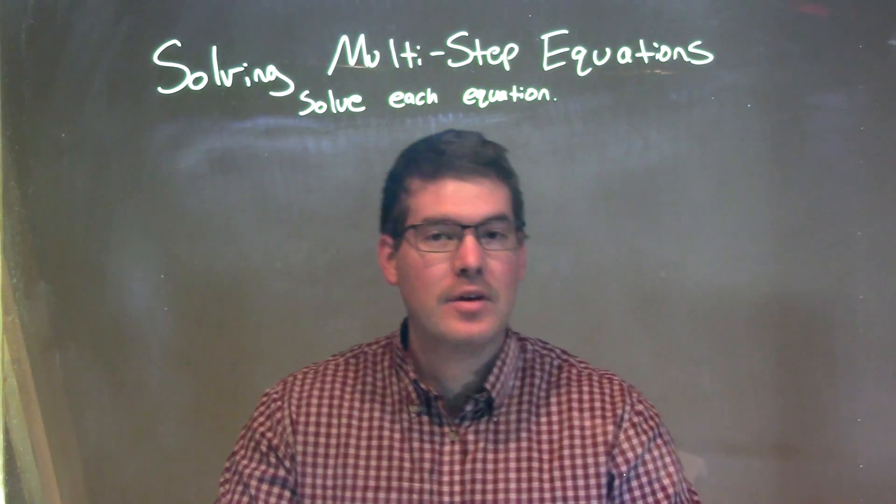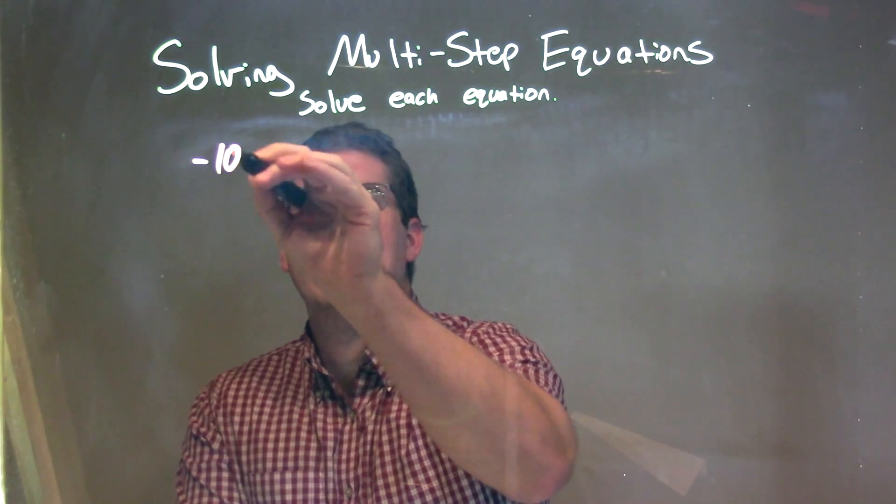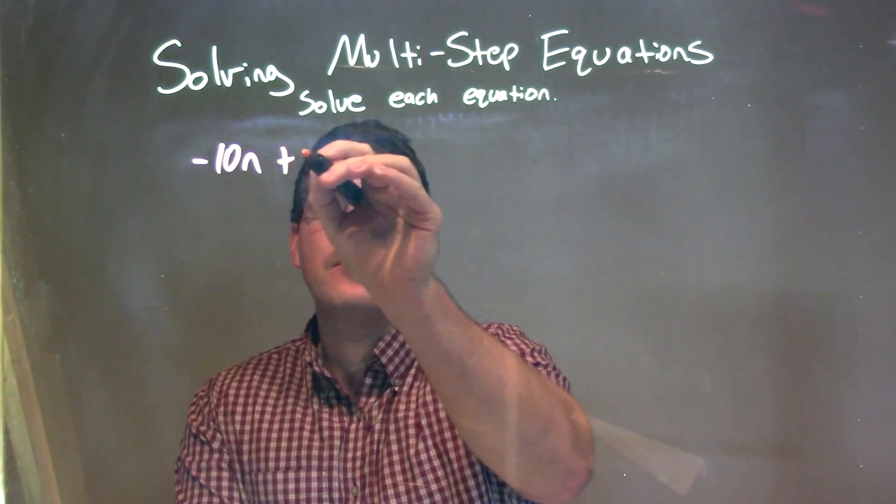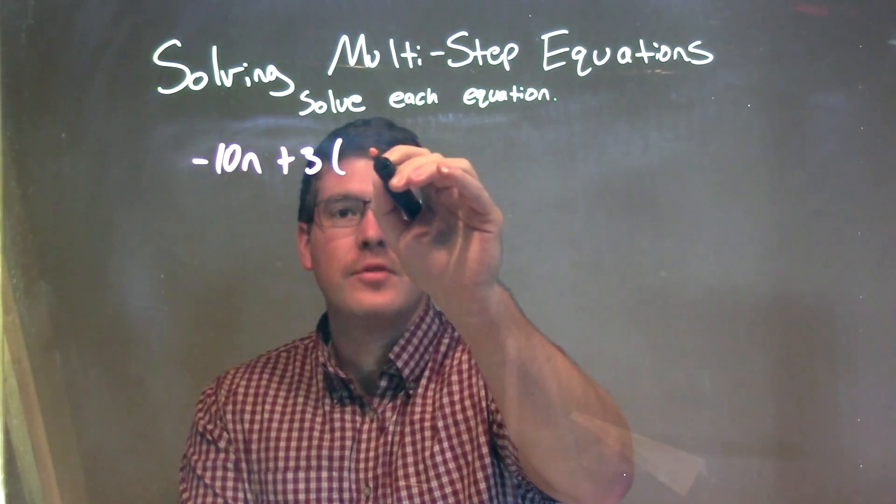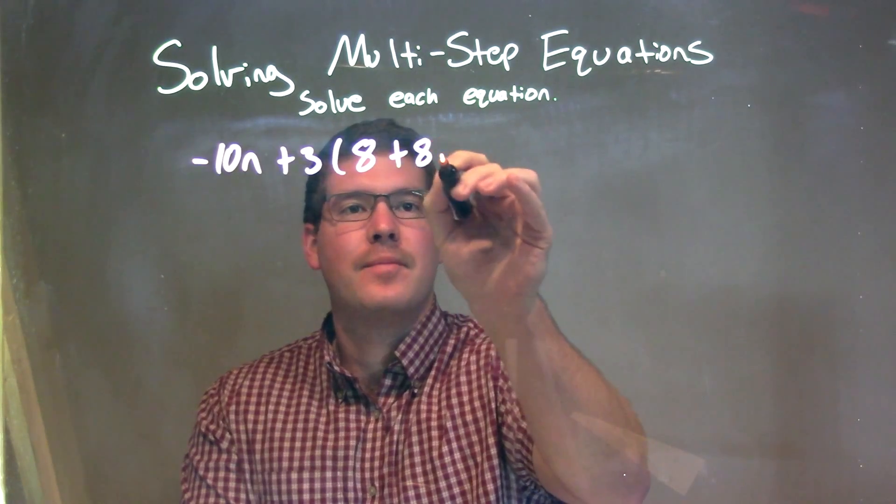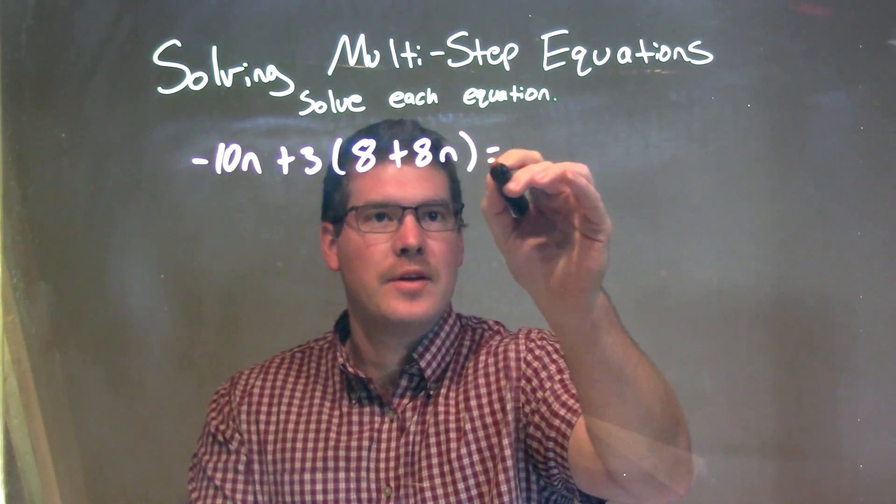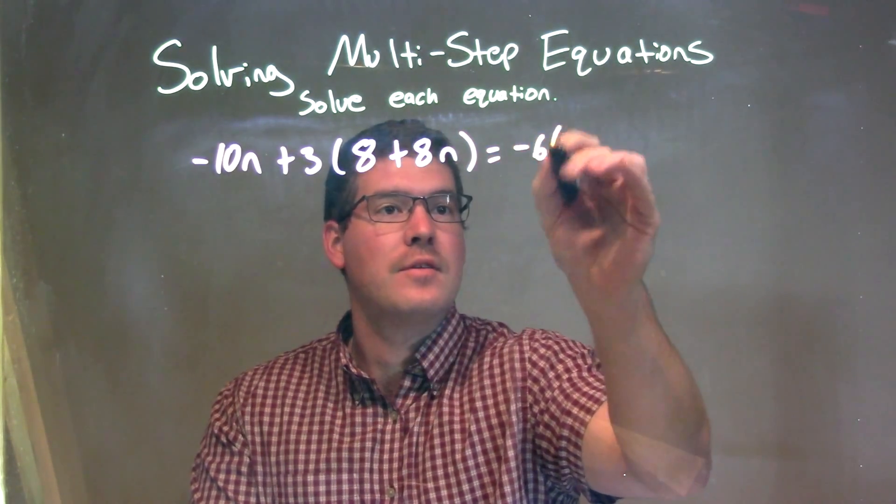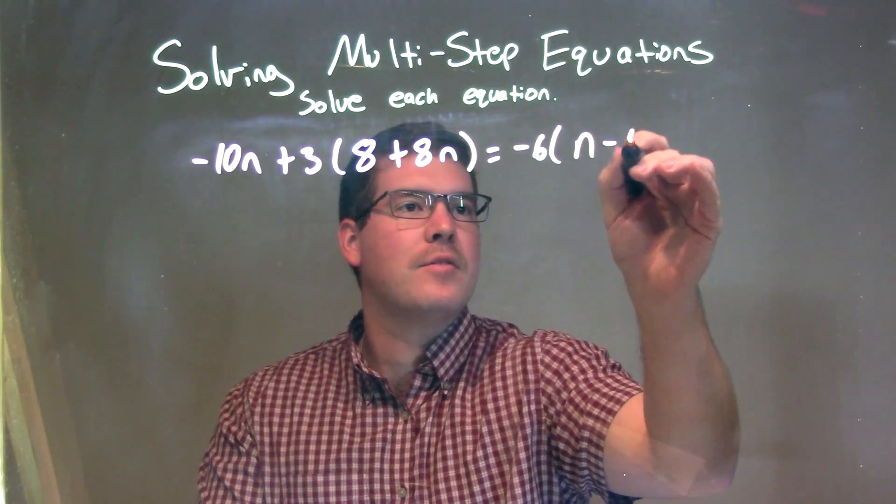So if I was given this equation here: -10n + 3(8 + 8n) = -6(n - 4).